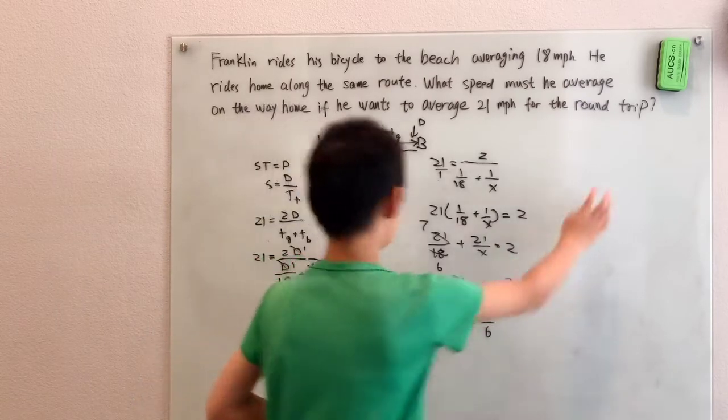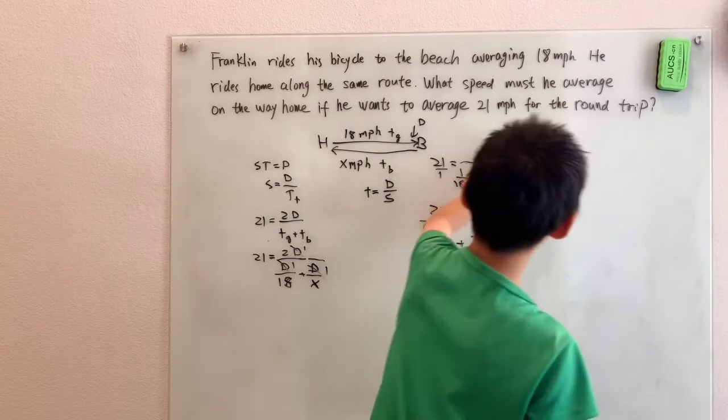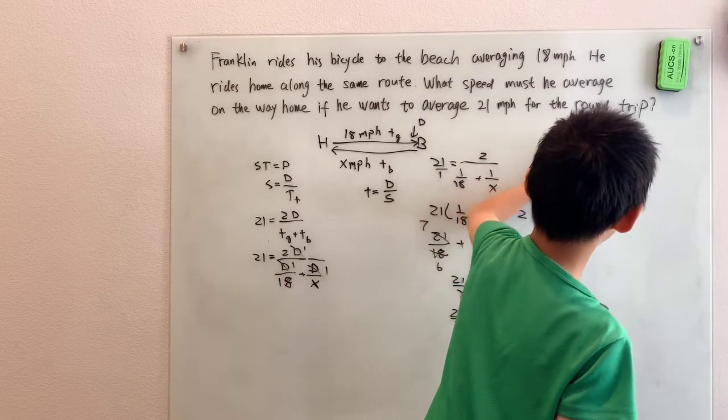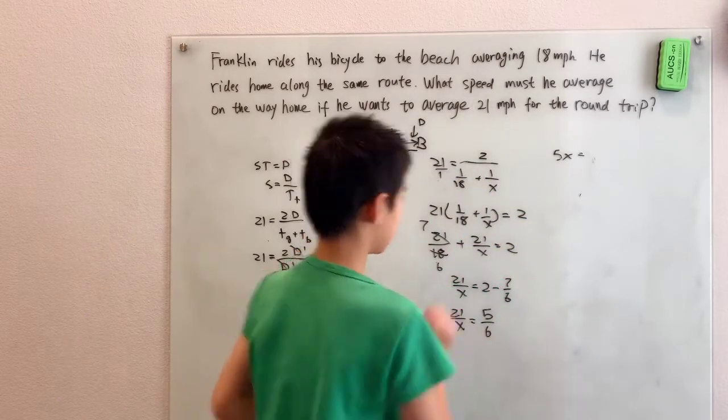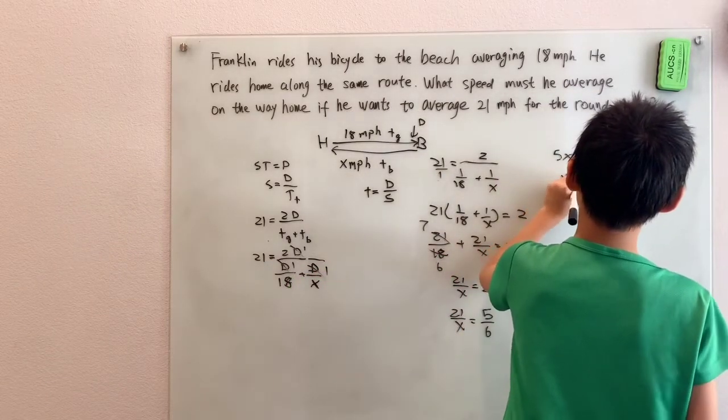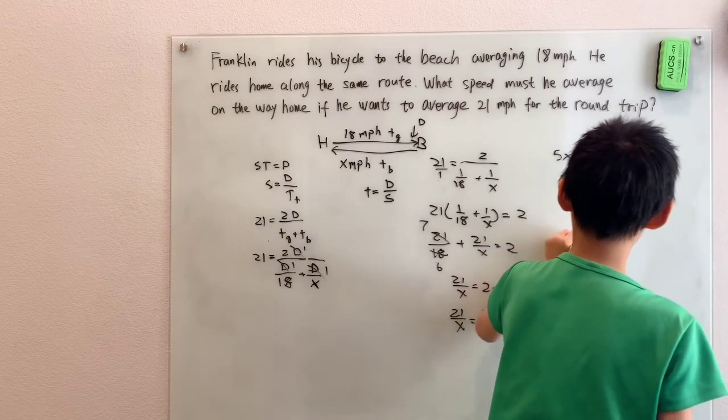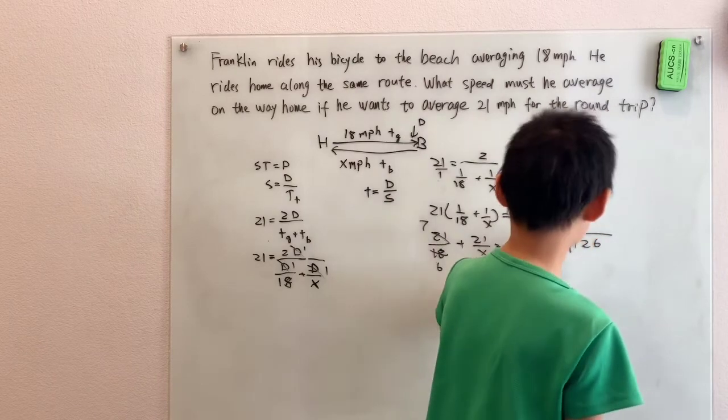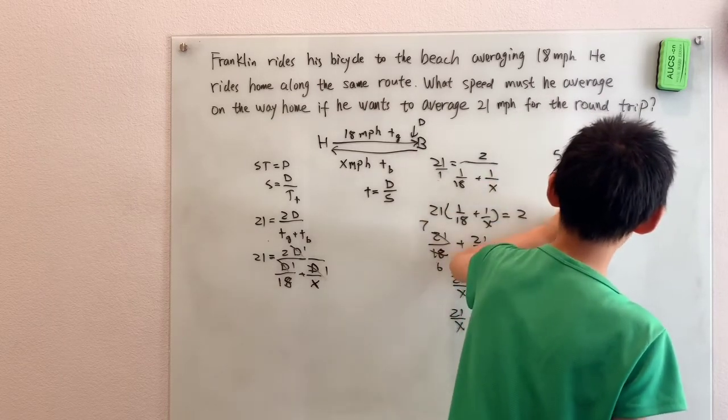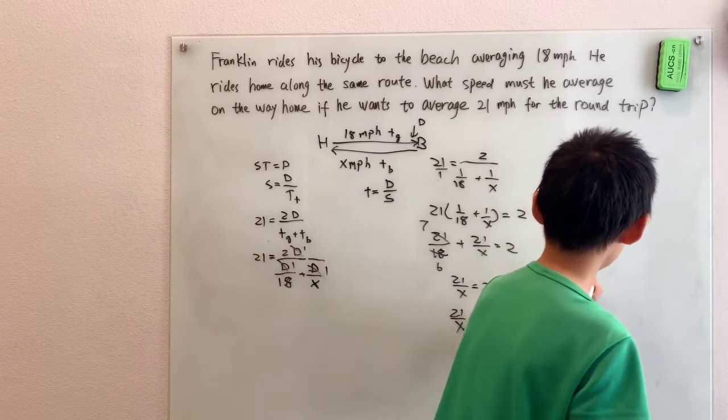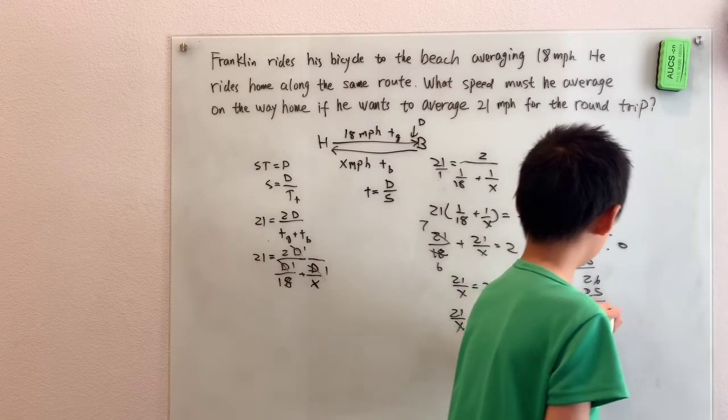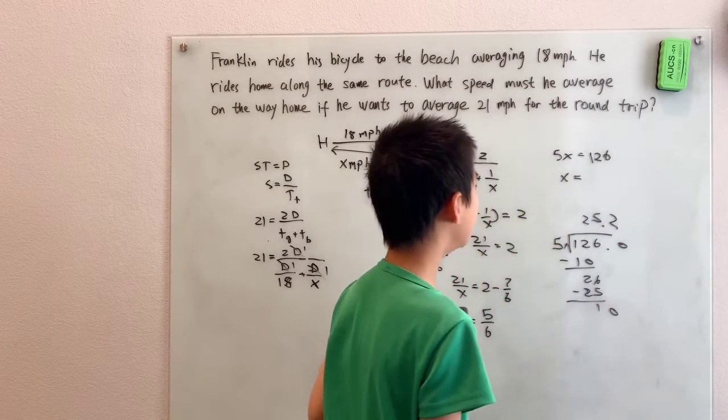And now finally, cross multiplying again, 5 times x, 5x equals 6 times 21. 6 times 21, 6 times 20 is 120, plus 6 times 1 is 6, so 126. Now finally, dividing by 5. So that means we have our answer, x equals 25.2.